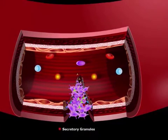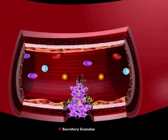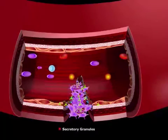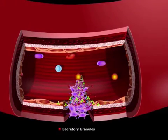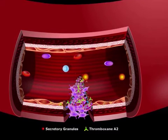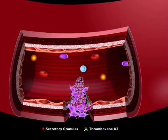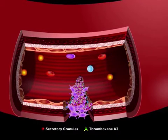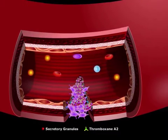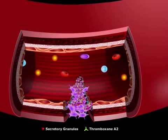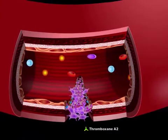Secretory granules containing ADP are released and serve as a potent activator of platelet recruitment and aggregation. Thromboxane A2 is also released from activated platelets. It is a powerful vasoconstrictor and enhances platelet aggregation. These events collectively lead to the formation of the primary hemostatic plug.